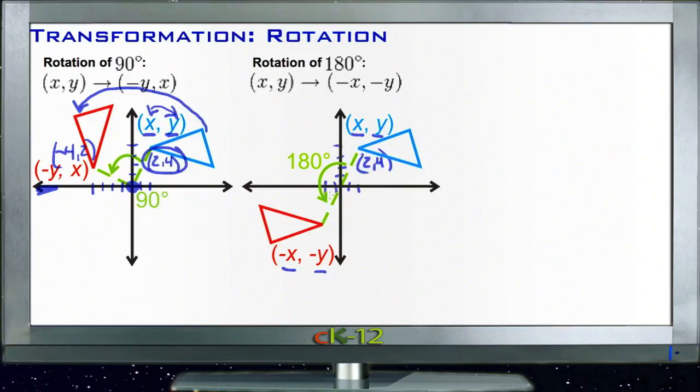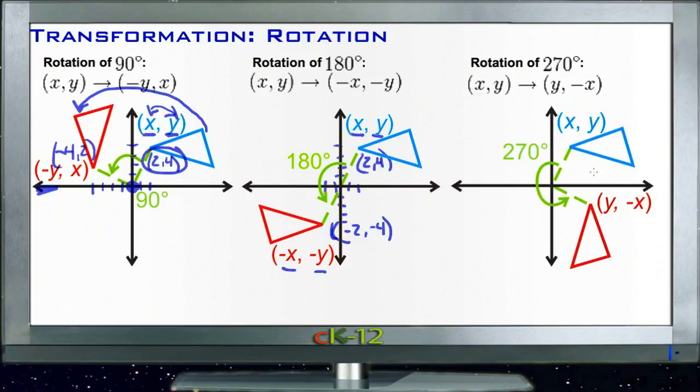And then 270° is exactly the opposite of 90°. We go ahead and swap the order; we take X and Y and we replace their order, we swap them back and forth, but we make the X negative, whereas the first time we made the Y negative. So our (2,4) location becomes (4,-2) on our new image.